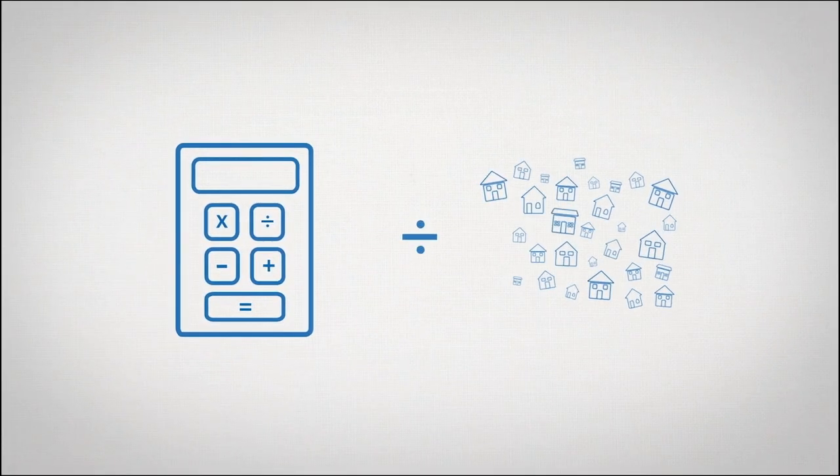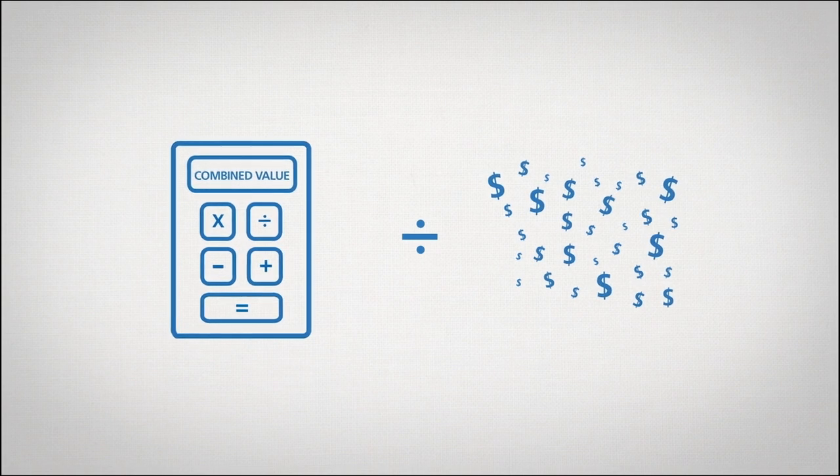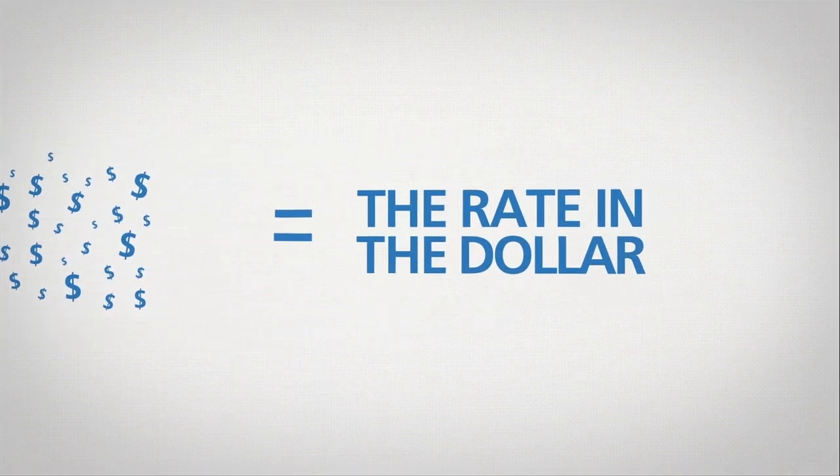To determine what each rate payer needs to pay, Council then divides the amount it needs to spend by the total combined value of all the properties. This is known as the rate in the dollar.